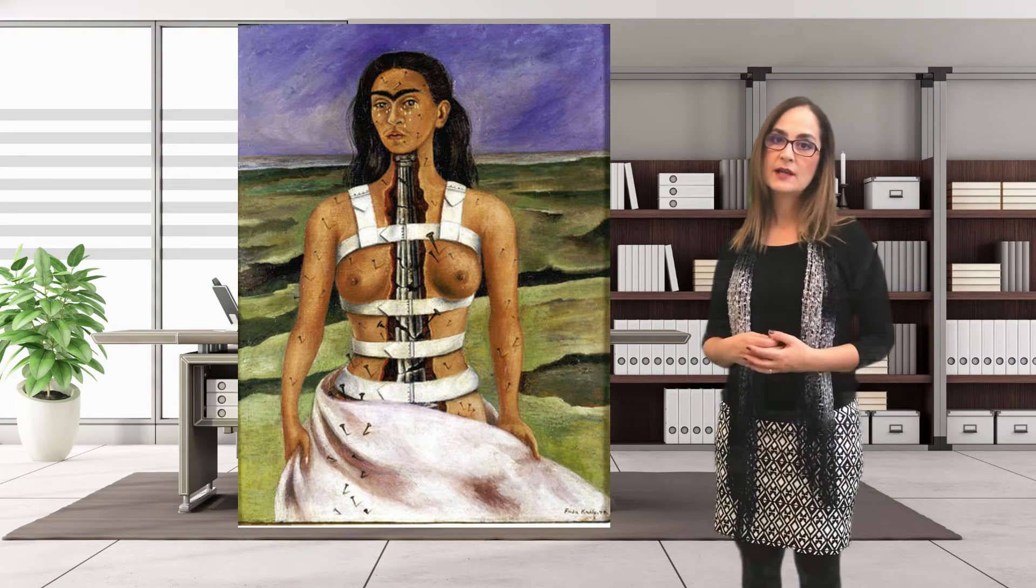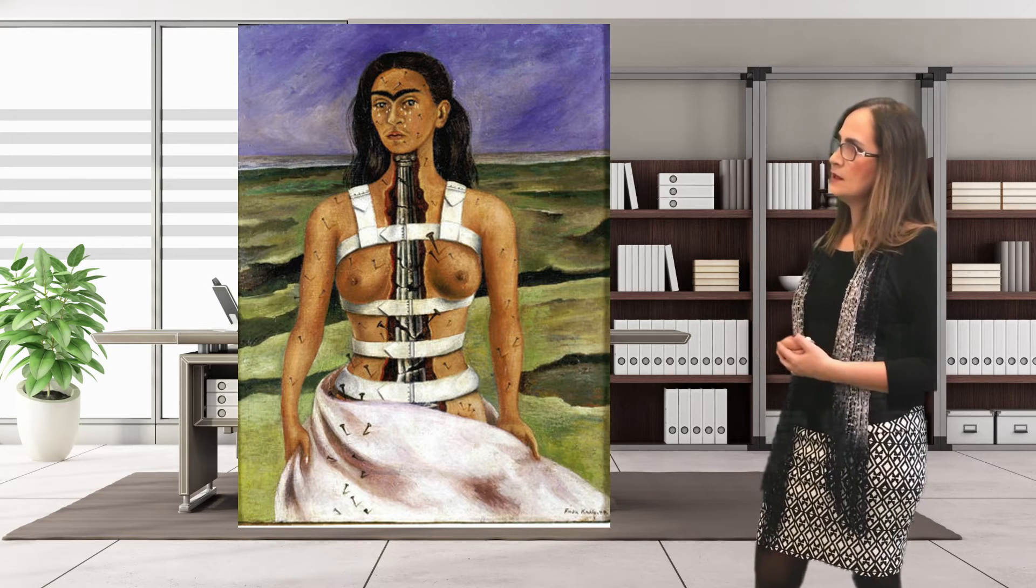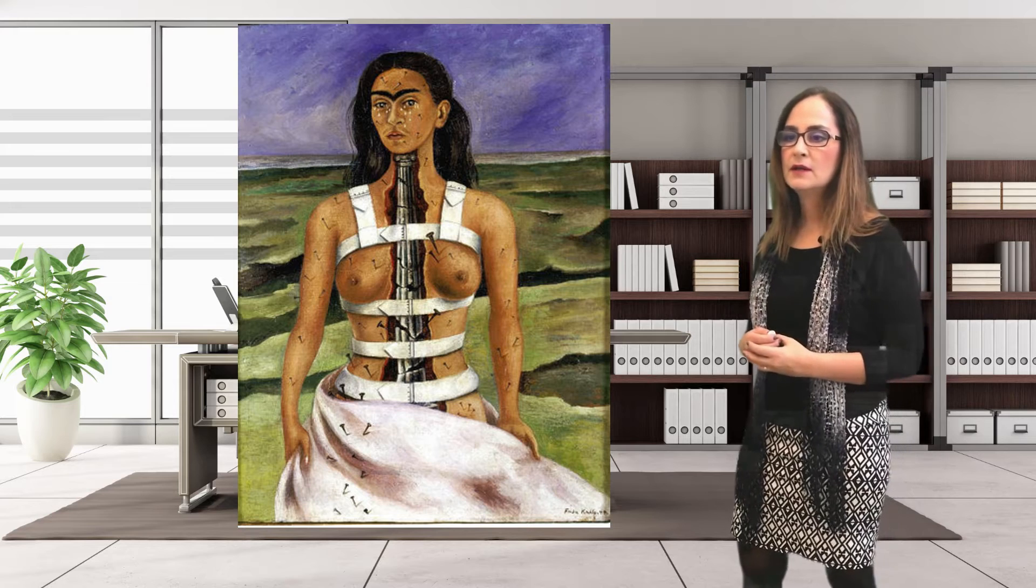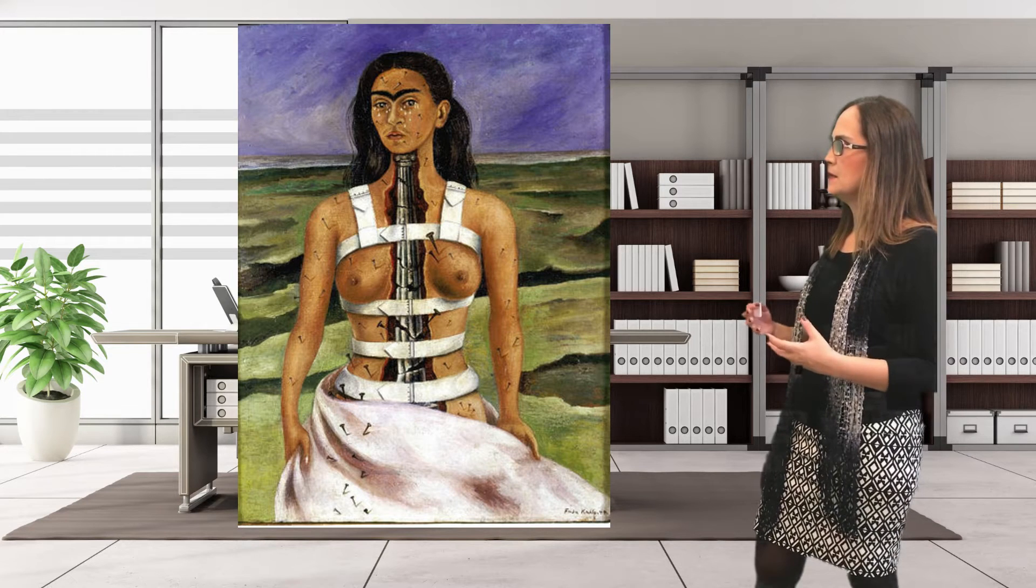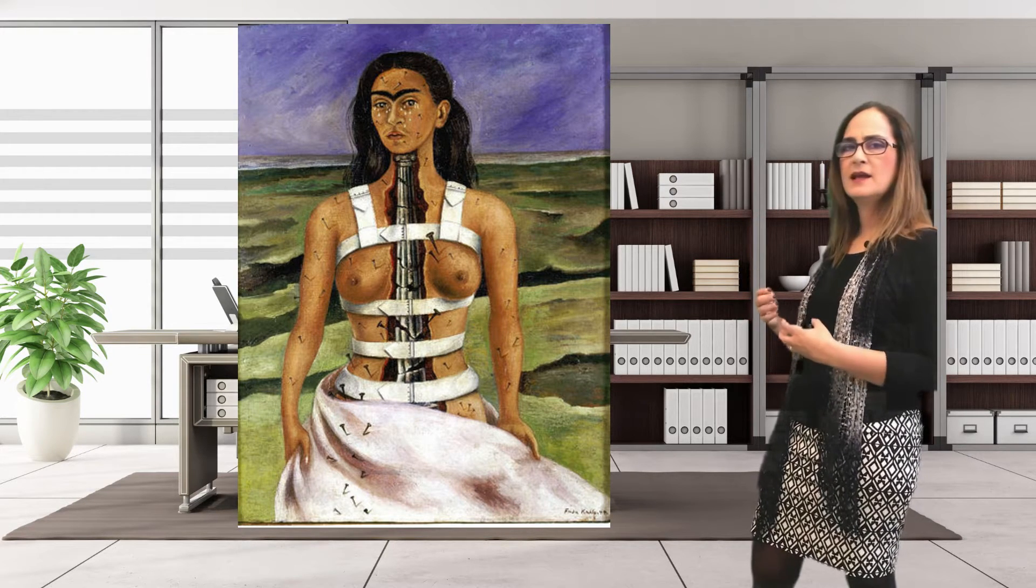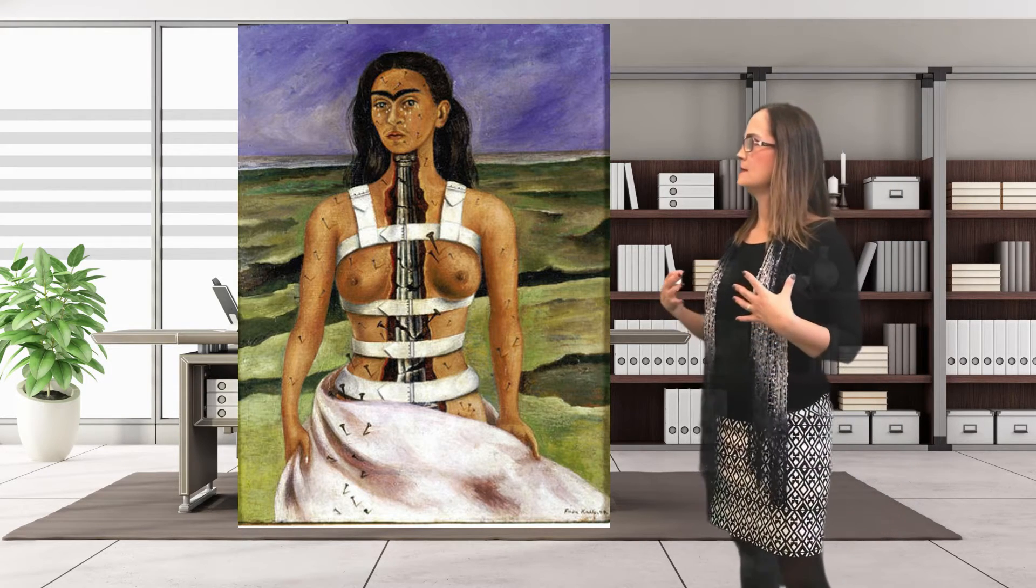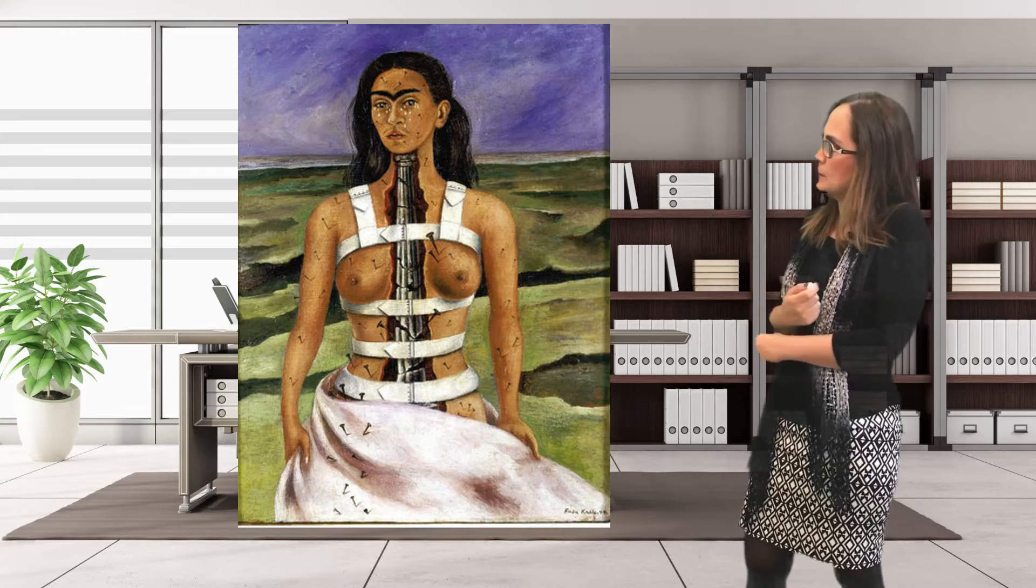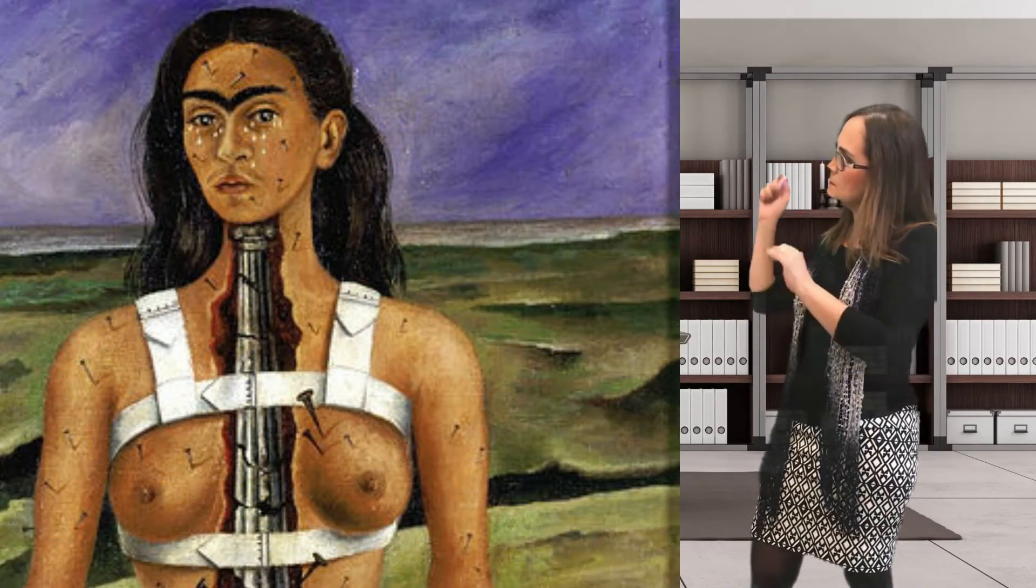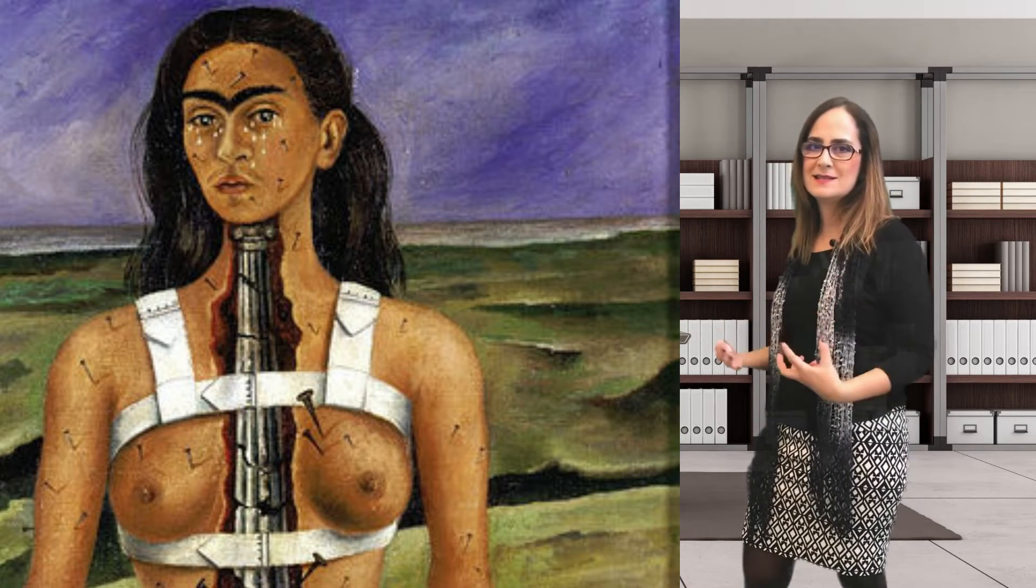A very well-known painter Frida Kahlo, she had neuropathic pain and she painted her pain. If we see one of her paintings, this is called the broken column, it's a self-portrait from 1944. We see that she painted her spine as a metal rod, she also painted her torso as being in a metal corset always squishing her back and her abdomen, and she also painted some pins and needles all over her skin that was constantly causing this tingling in her skin.